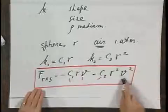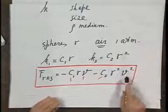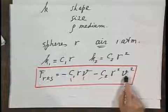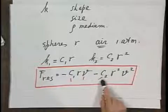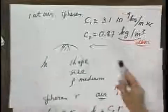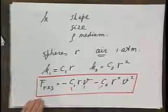So we shouldn't be surprised then that we have an r-squared term here, that is due to the geometry, and that we have a v-squared term here. And the C2 holds in it, buried, because you can't quite see that here, but it holds in it the density of the medium.